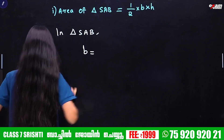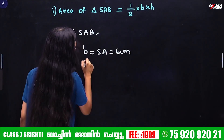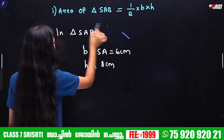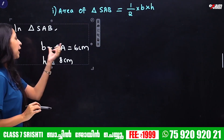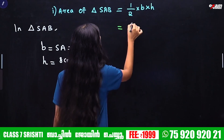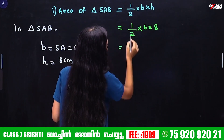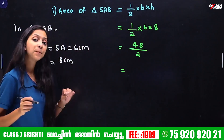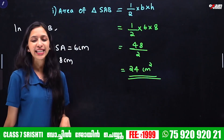What is the base? SA. SA is equal to 6 cm. What is the height? 8 cm. So in triangle SAB, B is equal to 6 cm and H is equal to 8 cm. Half into 6 into 8 equals 48 divided by 2. That is 24 cm².